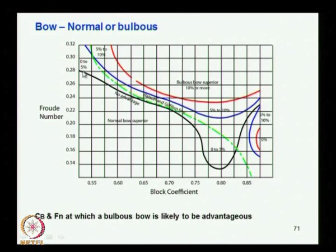If the bulb is designed for a particular service speed, it will become effective only in a small range around that service speed. Beyond that it is not so effective, and in some range it may have a negative effect because the wave generated by the bulb may create a constructive interference with the ship-generated wave. That is why the size and type of bulb depends on the speed and block coefficient of the vessel.